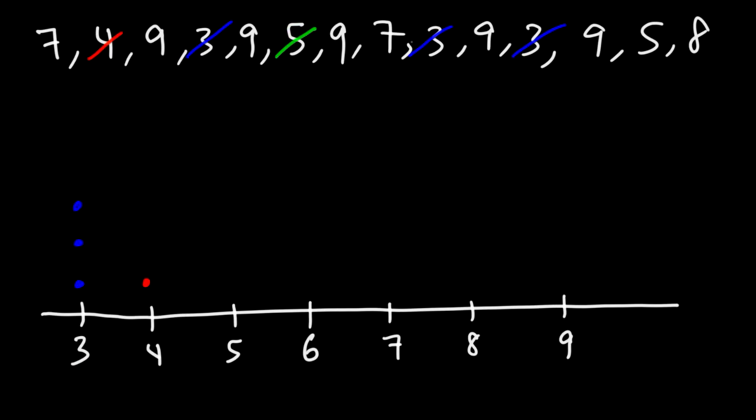And we have 1, 2 fives. And I don't see any 6s. Now we have 1, 2 sevens, so let's put 2 dots for that. And we only have 1 eight.